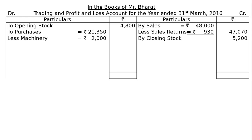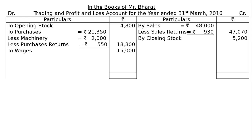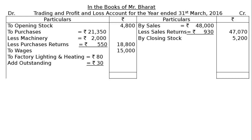The next item is less purchases return Rs. 550; in the final column we will have Rs. 18,800. Next is wages Rs. 15,000, and factory lighting and heating Rs. 80. From adjustment 2, three months factory lighting and heating due but not paid Rs. 30 — add outstanding factory lighting and heating Rs. 30 — giving a total column figure of Rs. 110.